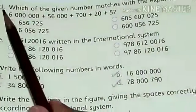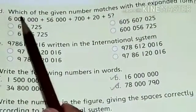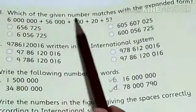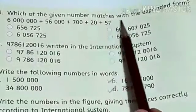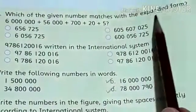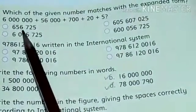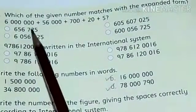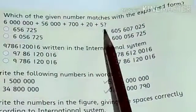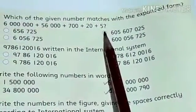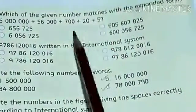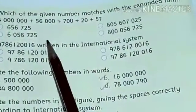Now part D: which of the given numbers matches with the expanded form? We have to first add these digits and then match the answer.